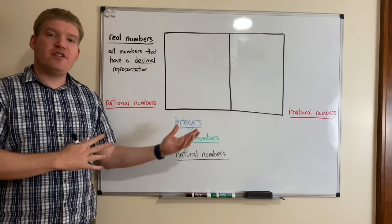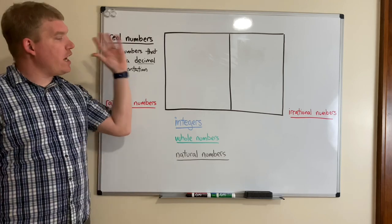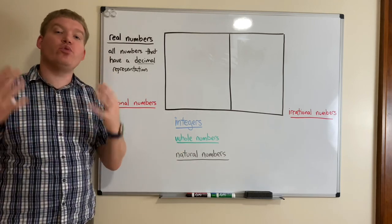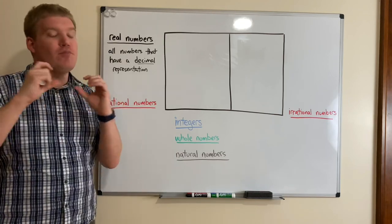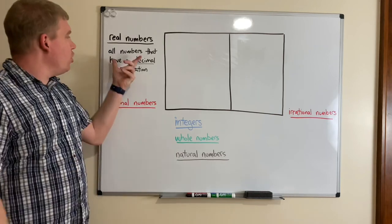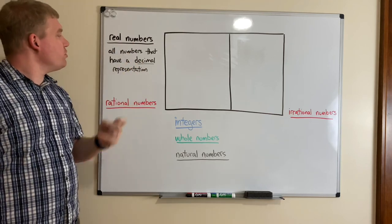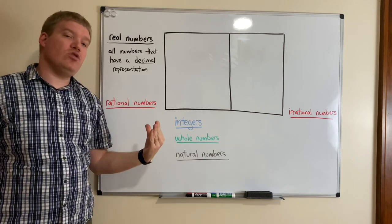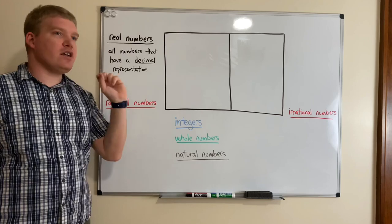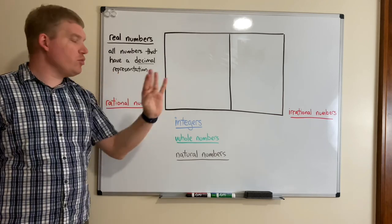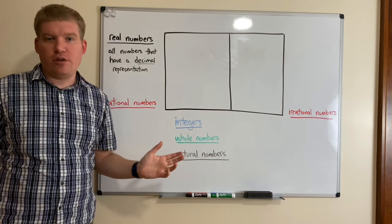Here you'll see a representation of what you saw in that PDF sent last night on how we're going to subset our real numbers — how we're going to break them down into smaller and smaller sets that have more specific properties. The definition for real numbers, which you can write right above that chart: real numbers are any numbers that have a decimal representation. If there is some way you can think of to write a number with some number of decimal places, whether it goes on forever or not, that must be a real number.